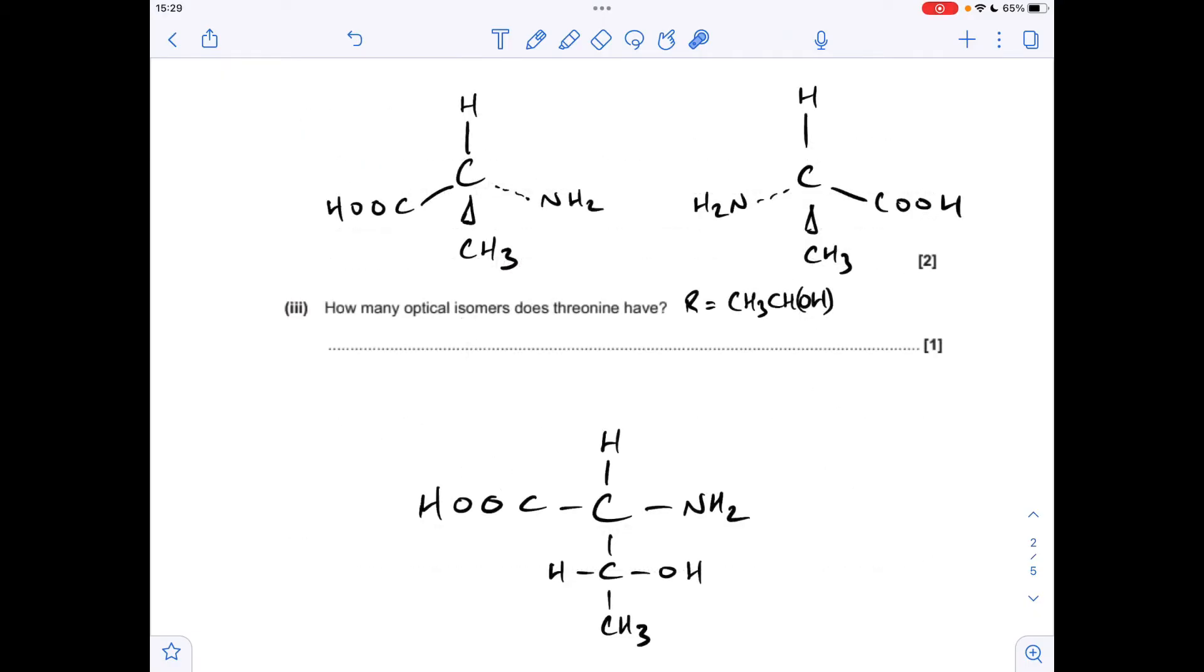Next part, how many optical isomers does threonine have? So there's the R group, again from the table. So you'll notice I've just drawn up a solid displayed formula for threonine. So you can see we've definitely got a chiral center there, because we've got four different groups of that carbon. We've also got a chiral center here. So because of that, we've got four possible optical isomers. And if you're interested, the way to work out how many optical isomers you can have, you raise two to the power of the number of chiral centers. So in this case, it was two to the power of two, which gives us that four.